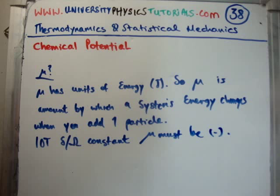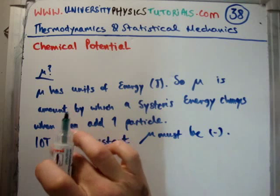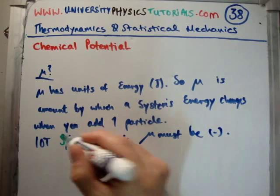So that should make sense. We add a particle, therefore we need to have this negative term in order to be able to hold the entropy or the multiplicity fixed.